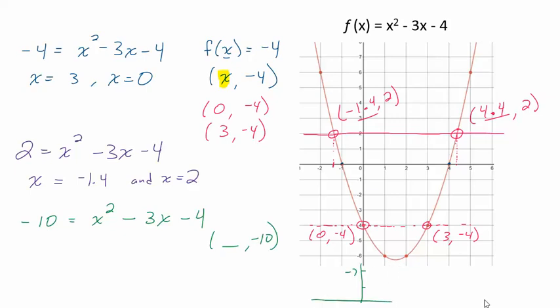But you can see this is the lowest point here is negative 6 point something. So if I were to draw some line down here at x equal at negative 10, y equal negative 10. It's not going to touch. So guess what? This thing has no solution. There is literally no value of x that you could put in here and have it come out to be negative 10. You could try all day and all night and it's not going to work.